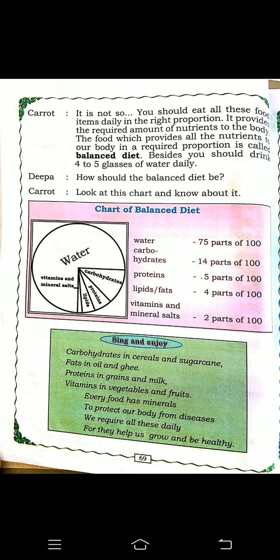The nutrients are carbohydrates, proteins, lipids which are fats, mineral salts, and vitamins. In which food carbohydrates, proteins, and vitamins are present I explained in the last class. Now, how many vitamins are there children?